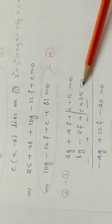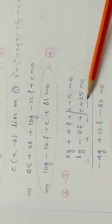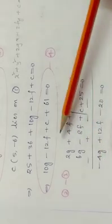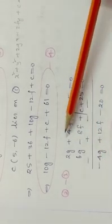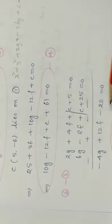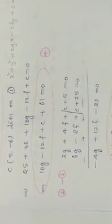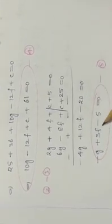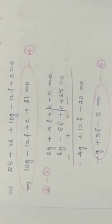Subtracting equation 3 from equation 2 to eliminate c: symbols change on subtraction. We get -4g plus 12f minus 20 equal to 0. Dividing through by -4: minus g plus 3f plus 5 equal to 0 — equation 5.